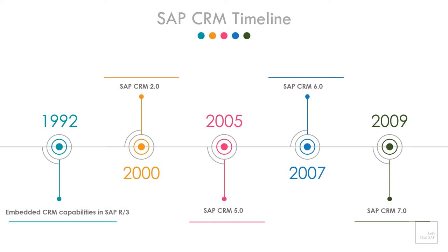Now let's take a look at what CRM software SAP has got to offer. SAP offers a variety of CRM applications in the form of both cloud and on-premise models. Initially, SAP offered CRM functionalities embedded within the R3 application in 1990. Later on in 2000, SAP released its first standalone CRM software called SAP CRM 2.0. The latest version is called SAP CRM 7.0, which is the on-premise version of SAP CRM application.